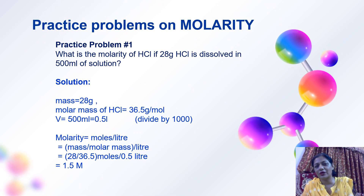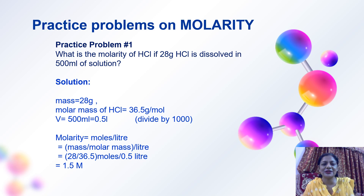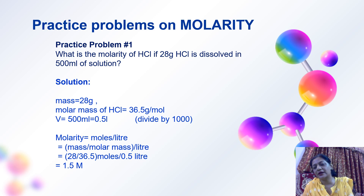Practice problem 1: What is the molarity of HCl if 28 grams of HCl is dissolved in 500 ml of solution? The mass is 28 grams. The molar mass of HCl is 1 plus 35.5 — 1 for hydrogen and 35.5 for chloride — which comes out to be 36.5 grams per mole. Volume is converted to liters by dividing by 1000. Using the molarity formula, the result comes out to be 1.5 molar.